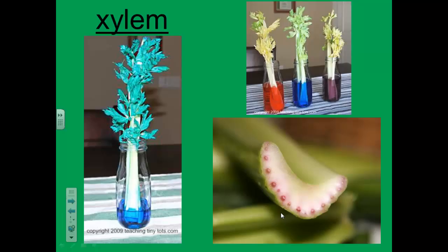Here are examples of xylem tissue. If you were to put celery into a vase with food-colored water, you would be able to see that the food coloring, or the water, is flowing up the xylem to the leaves and then coloring the leaves in turn.